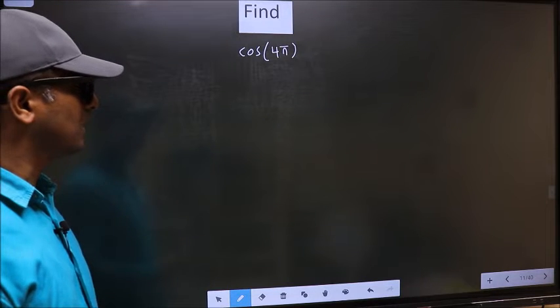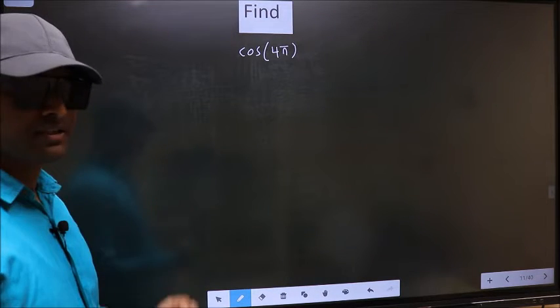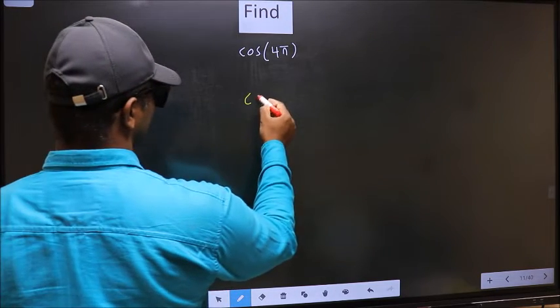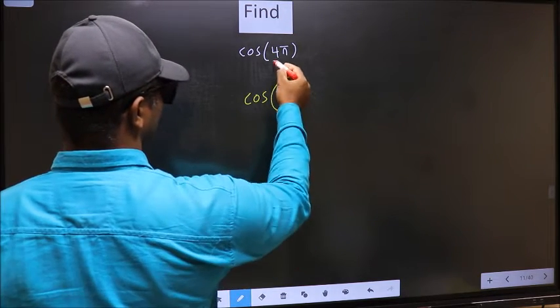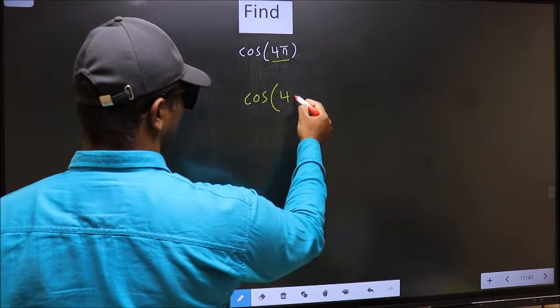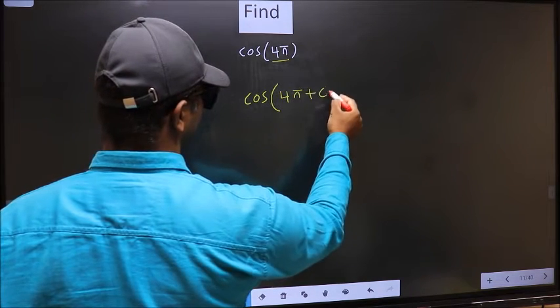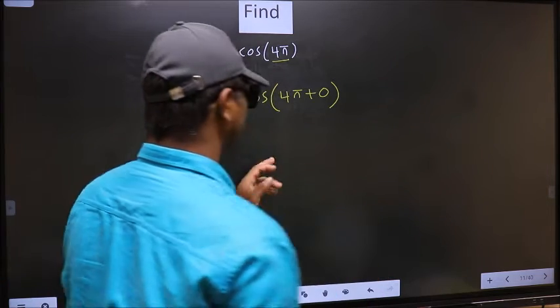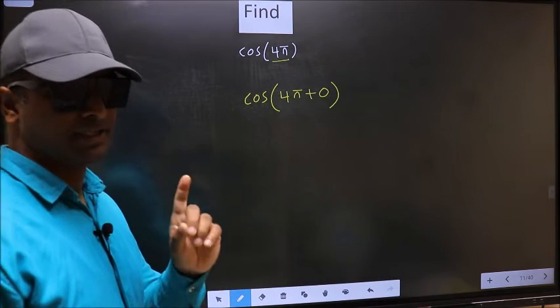Find cos 4π. To find this, what we should do is see cos in place of 4π. Now I write 4π plus 0. This is your step 1.